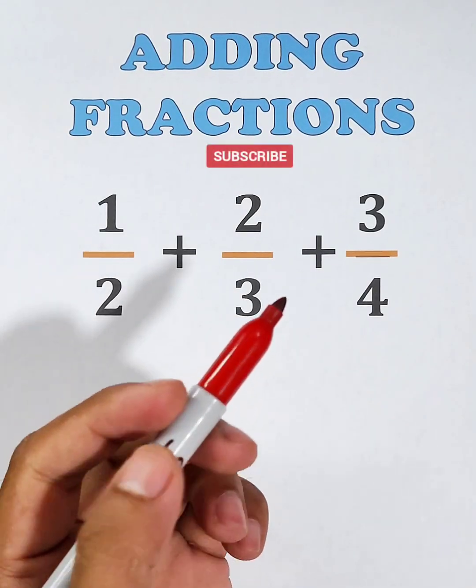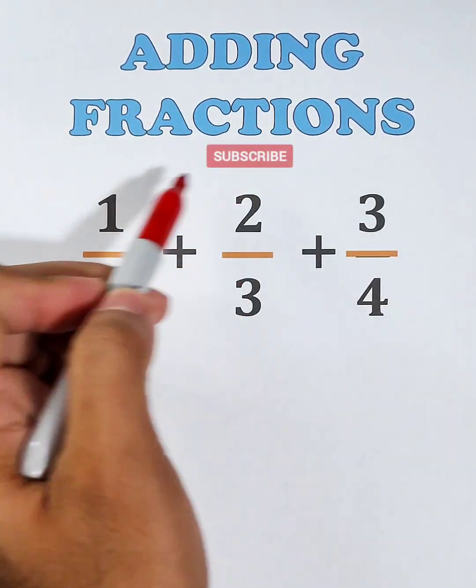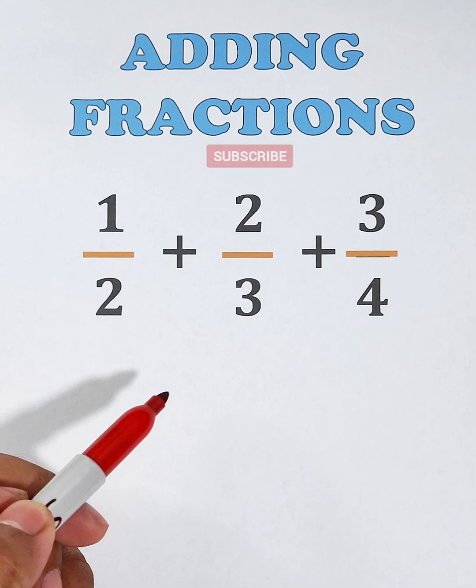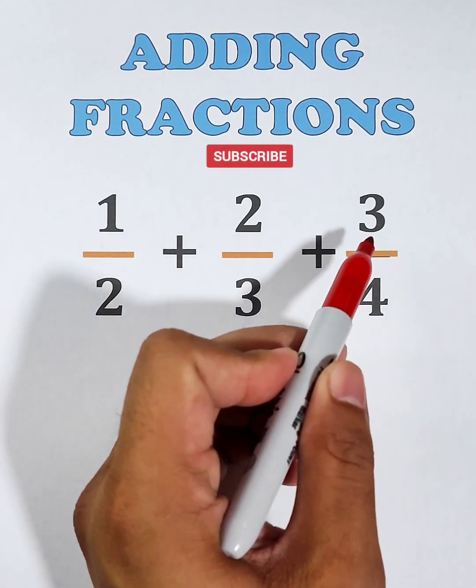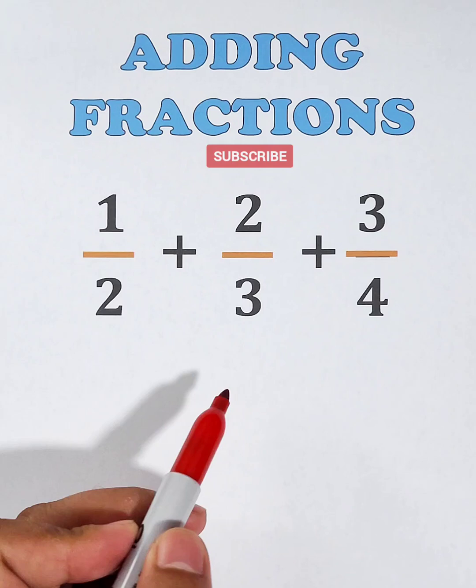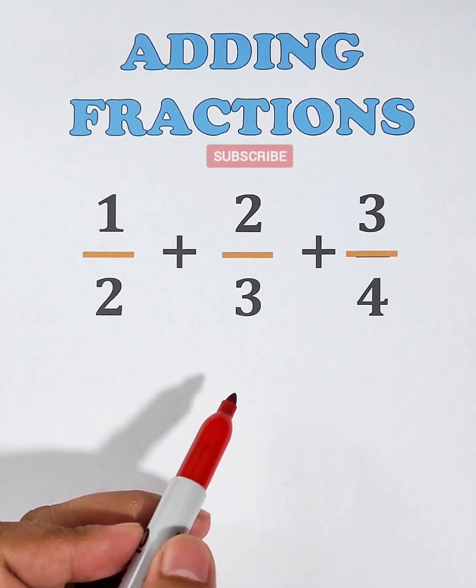Hello everyone, this is Teacher Gon. Let's talk about adding fractions. What we have here are three fractions: 1 half plus 2 thirds plus 3 over 4. How are we going to add these three fractions?